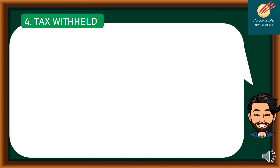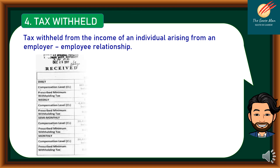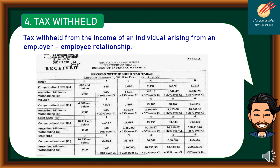The last deduction is tax withheld — the withholding tax from the income of an individual arising from an employer-employee relationship. For this discussion, we will limit this to personal income tax, using the revised withholding tax table effective December 1, 2018 until December 31, 2022. Our discussion will focus on the monthly withholding tax.